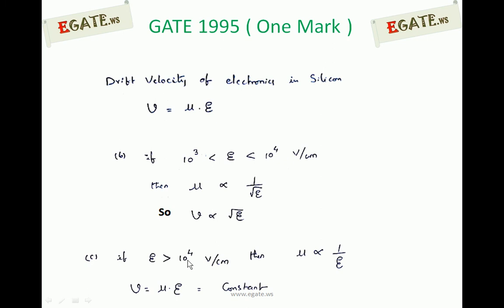If the electric field is greater than 10⁴ volt per centimeter, then Mu is inversely proportional to electric field. So as electric field increases by some amount, mobility reduces by the same amount, and their product — the drift velocity — remains constant. This gives rise to a constant velocity or velocity saturation region.